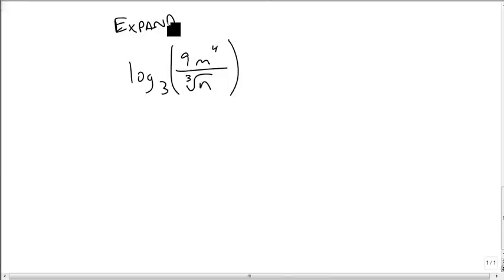So we just start out by taking care of our division first. This becomes log base 3 of 9m to the 4th minus log base 3 of the cube root of n.